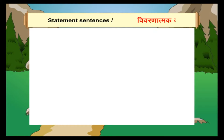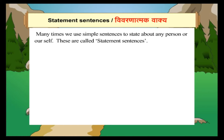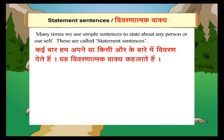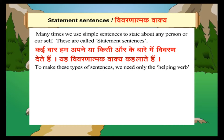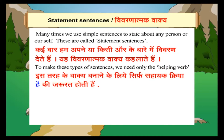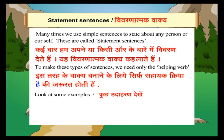Statement Sentences (Vivranatmak Vaakya). Many times we use simple sentences to state about any person or ourselves. These are called statement sentences. Sometimes we give descriptions about ourselves or others. To make these types of sentences, we need only the helping verb. Look at some examples.